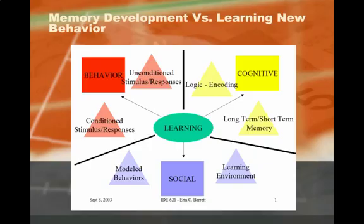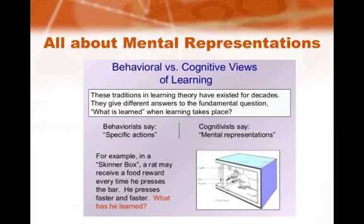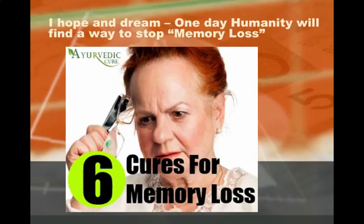In the bigger picture, there are three kinds of learning theories: behavioral learning, cognitive learning theories, and social learning theories. Information processing theory falls under cognitive learning theories. The fundamental difference is that behavioral learning theory focuses on developing new behavior, whereas cognitive learning theories focus on creating new mental representations of information.